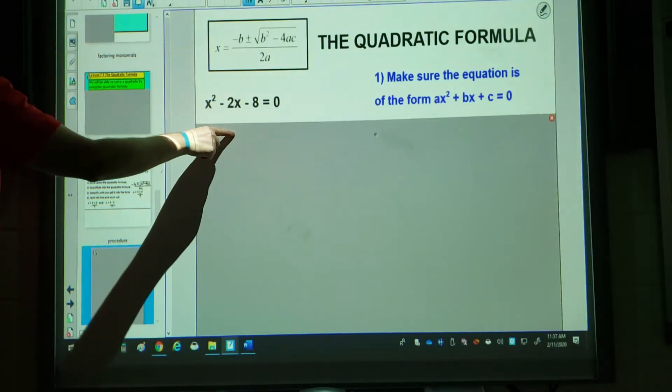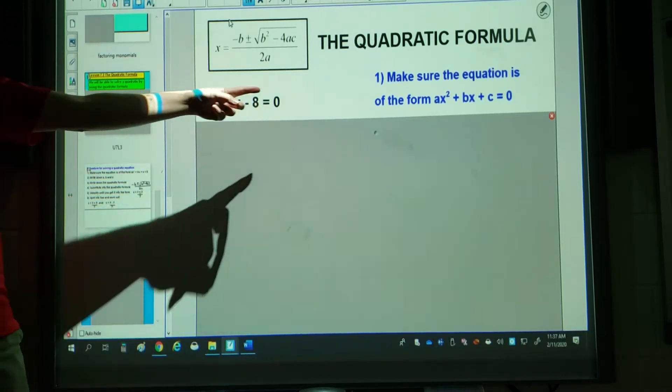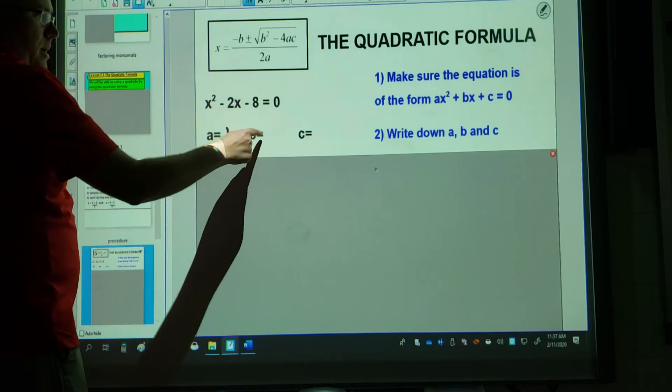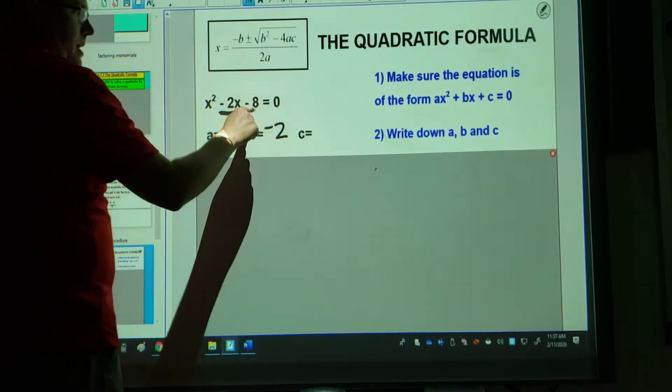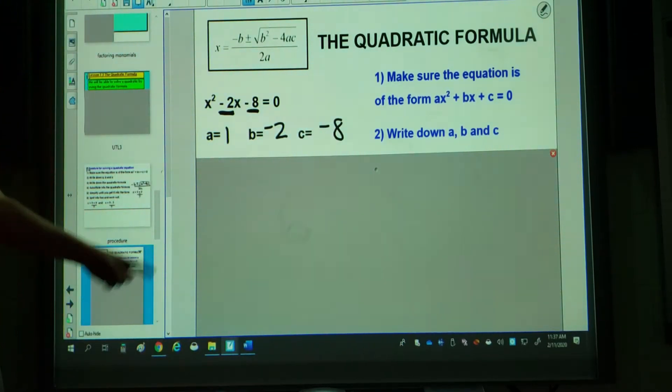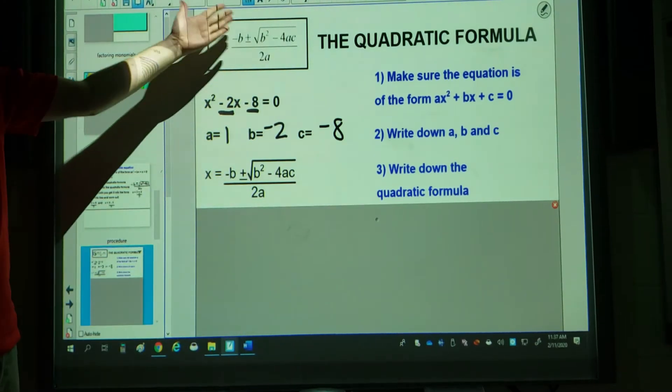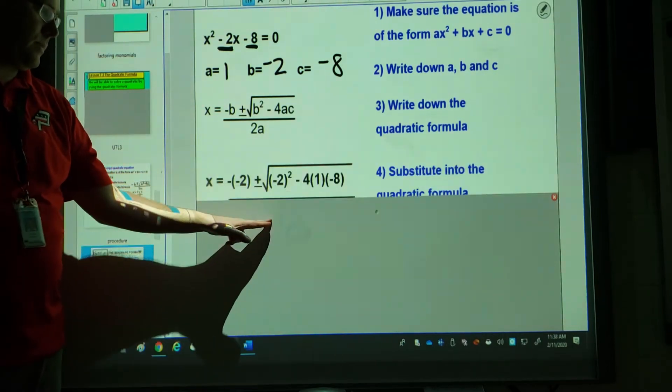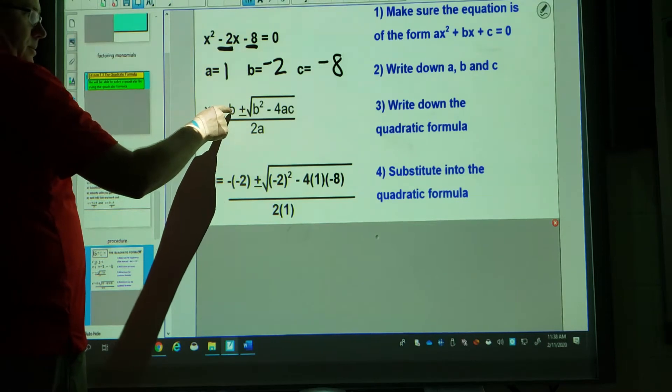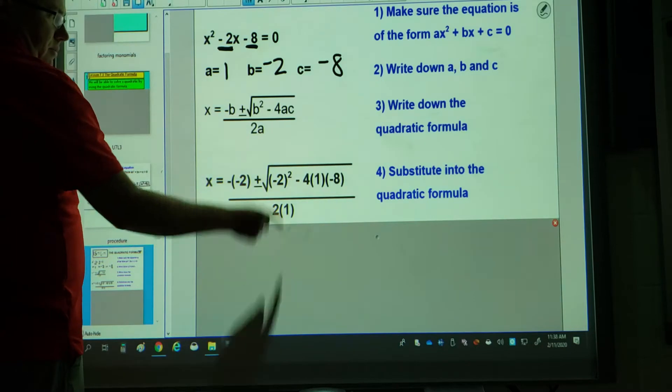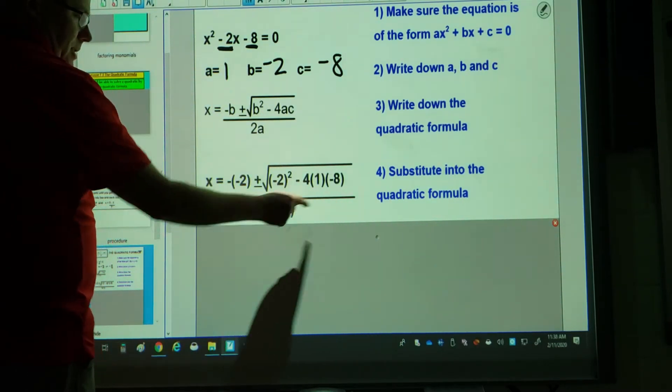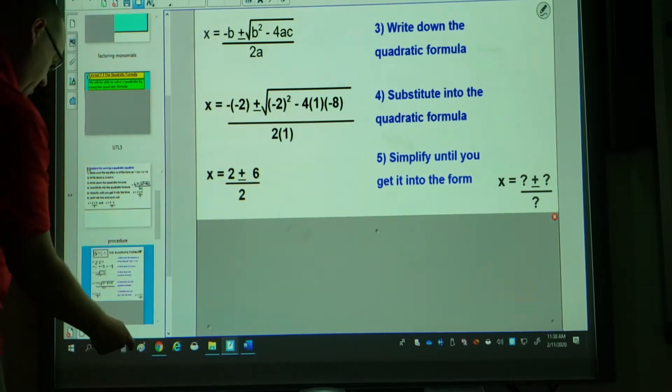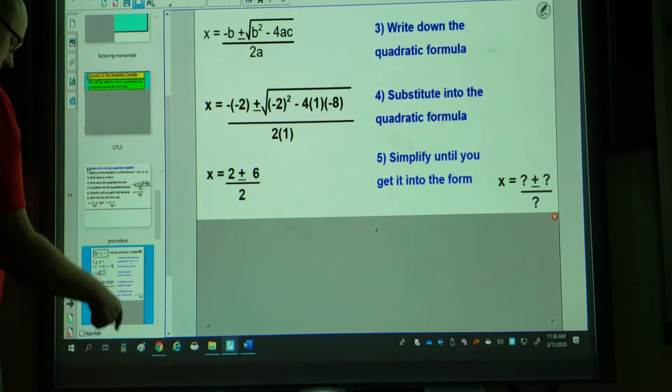Let's have a look at a question and see how it works following those steps. If this is the question, first of all I want to make sure it's equal to zero. We have a number of x-squareds, so in this case one. B is the number of x's—make sure you look at the sign as well—so negative two. C is the number at the end, which is negative eight. A lot of people want to cut out writing down the quadratic formula, but I'd be very careful about doing that. A lot of students that do that tend to make careless mistakes, so I would write down the question each time. You're then going to substitute the numbers in. Notice when I'm substituting for B, I'm putting it in parentheses.